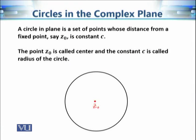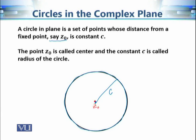The main concept we are going to use is the simple concept of a circle. A circle is a set of points in the plane whose distance from a fixed point z₀ is constant c. In other words, if this is the point z₀ and c is the distance, then the circle is basically the set of all points whose distance from z₀ is equal to c.